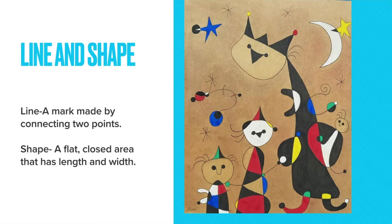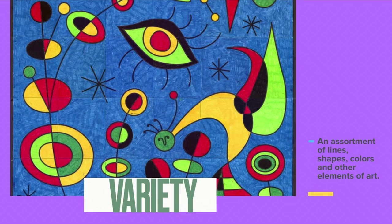We're going to be using a lot of our different methods of art, relearning and talking about our elements of art and our principles of design — and once again, variety means an assortment of lines, shapes, and other elements of art. As we can see here, this piece is very different from the other one: he uses lots more color and colors the background, so you can also color your background if you want.